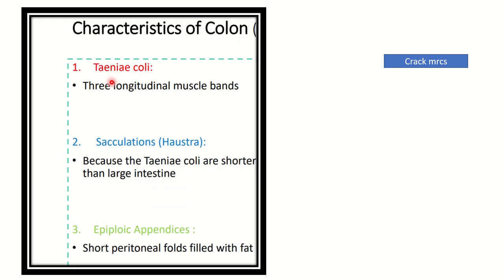Here we can see the important characteristics of the large intestine. First, the taenia coli — these are longitudinal muscle bands, three in number, present along almost the whole wall of the colon up to the rectum. In the rectum, the taenia coli acts as a continuous layer. The taenia coli is shorter than the large intestine, which is why the large intestine forms a pocket-like shape.